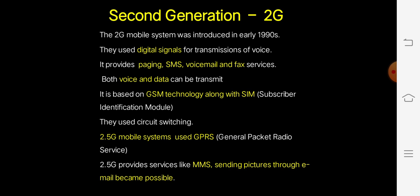Coming to the second generation: there were many disadvantages in 1G telecommunications, so the second generation has more advantages than first generation wireless communications. The 2G mobile system was introduced in the early 1990s and used digital signals for transmission of voice, whereas 1G used only analog signals.